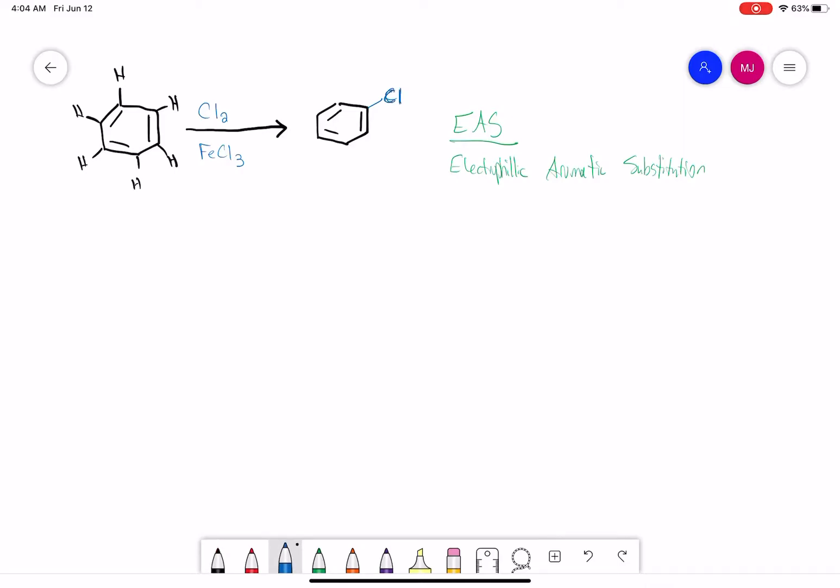And here, because we're using Cl2, we will be substituting a hydrogen with our chlorine. So the first part of the mechanism is generating our E plus or our EA.